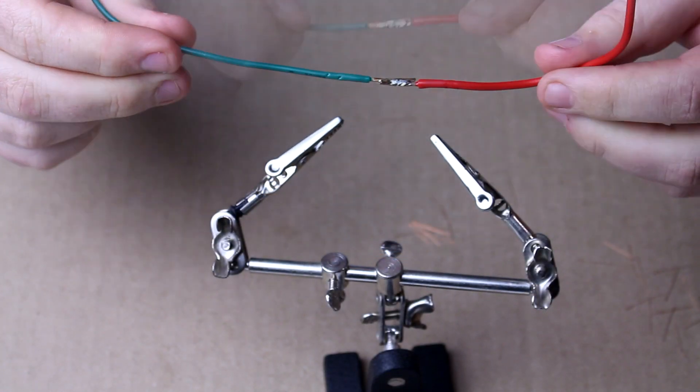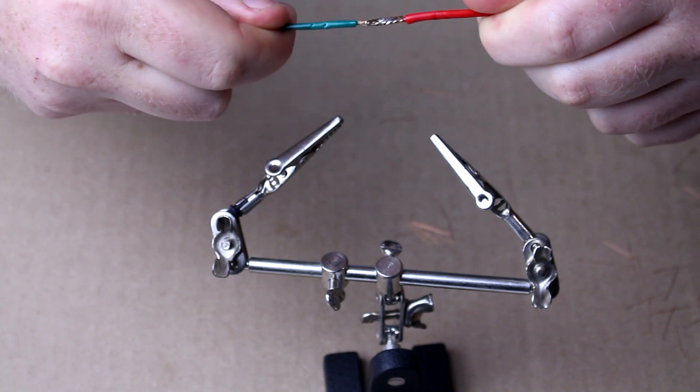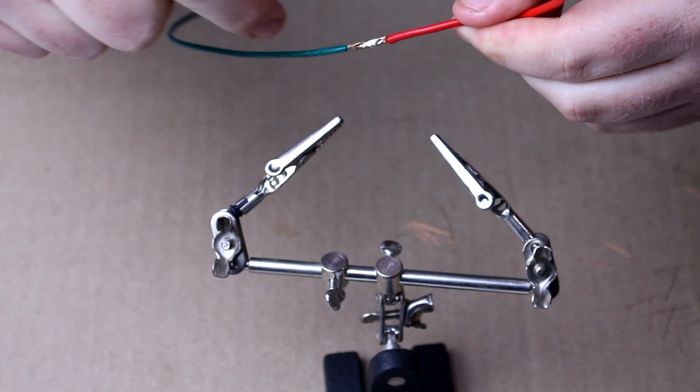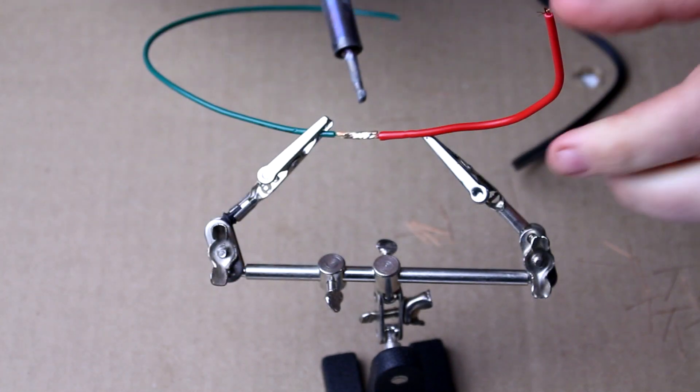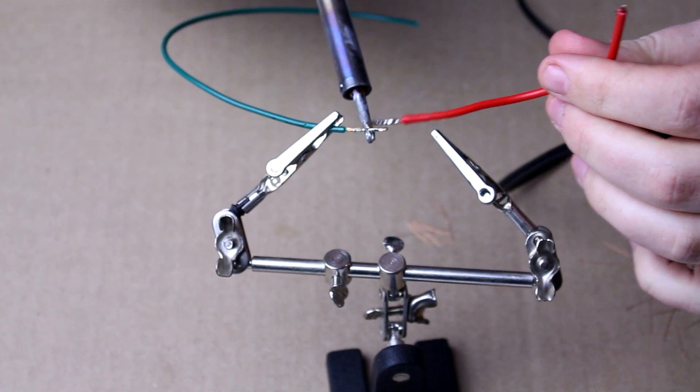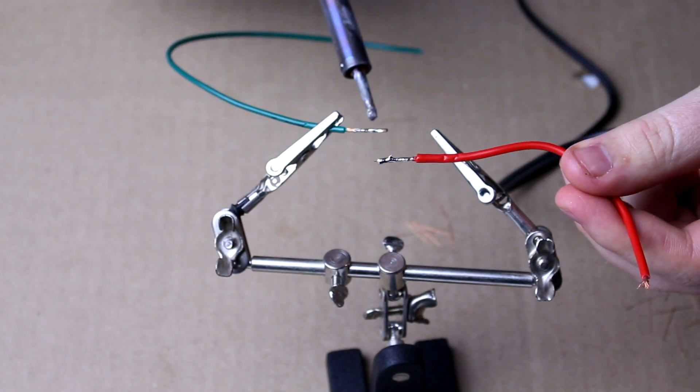All right that's a real quick splice. I'm giving it a tug and it still stays together even though the wires are not intertwined at all. I use this for prototyping. If I need to get this wire apart I just heat it up and it comes apart super easy.